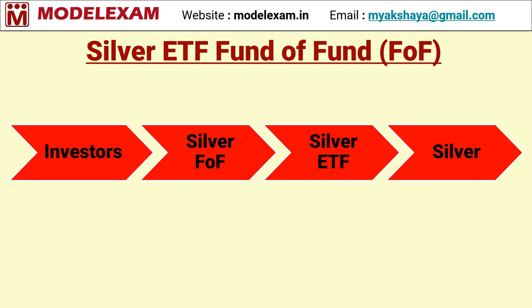In case the investor does not have a DMAT account, they take this route — investing in silver Fund of Fund, which invests in silver ETF, which invests in silver. The drawback is that investors have to bear double expenses: the expense of silver ETF plus the expense of silver Fund of Fund. However, with Fund of Fund, units can be bought or sold through the AMC directly, and investors can start a SIP — systematic investment plan — as low as 1000 or 2000 monthly.